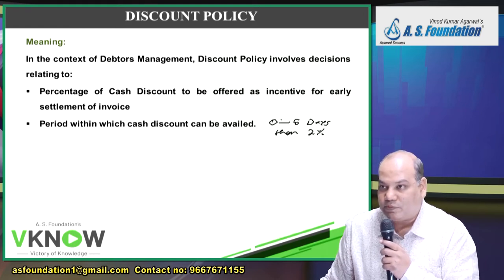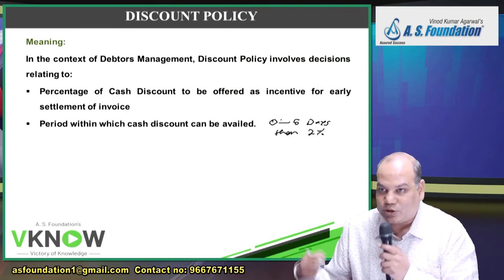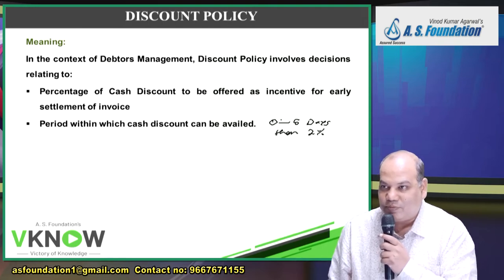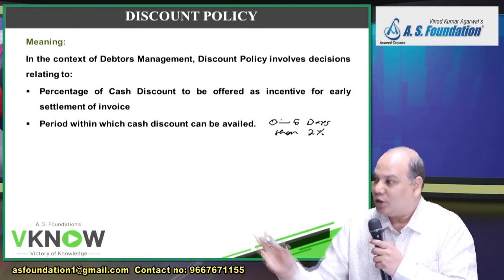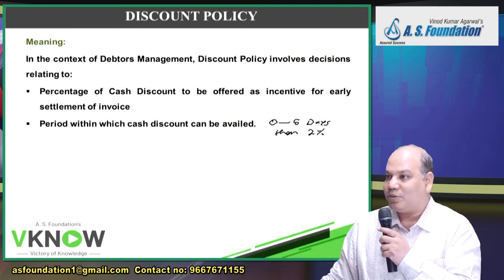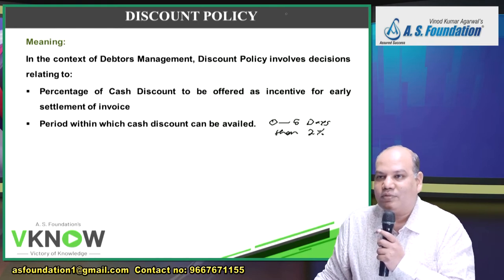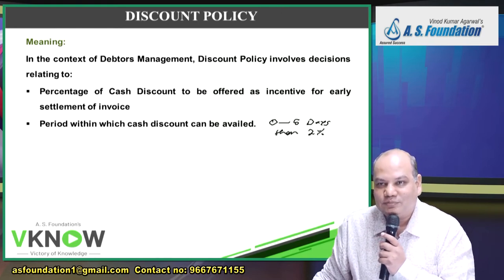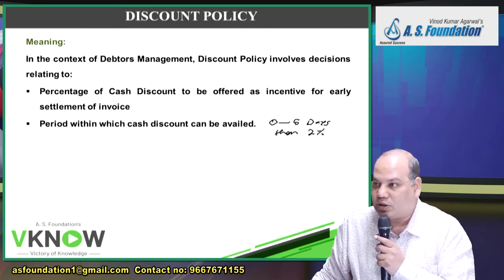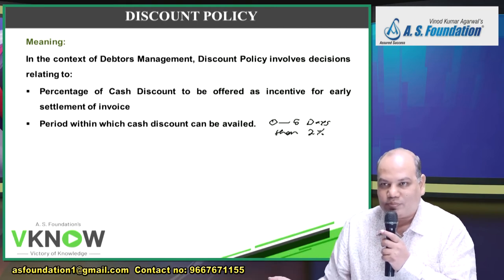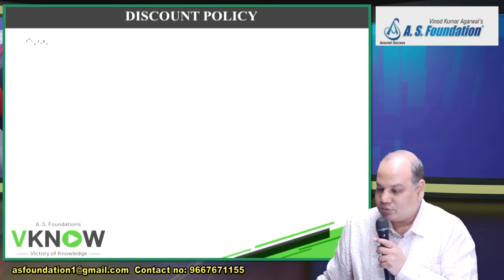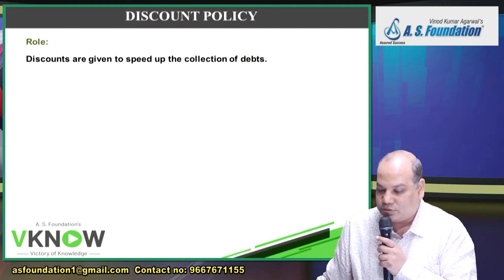If the customer pays within 5 days, they get 2%, so they will try their best to pay within 5 days. If they miss that deadline, they will try to pay within 10 days to get at least 1%. In some businesses the margins are very low, so even a 2% cash discount can itself be the profit for that business.